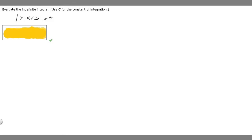In this problem we're told to evaluate the indefinite integral using C for the constant of integration. We're given the integral of (x + 6) times the square root of 12x + x squared, all times dx.